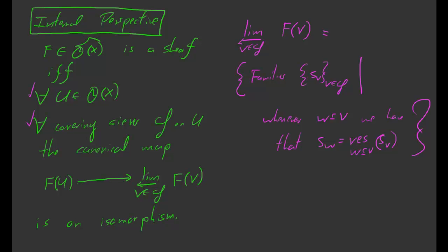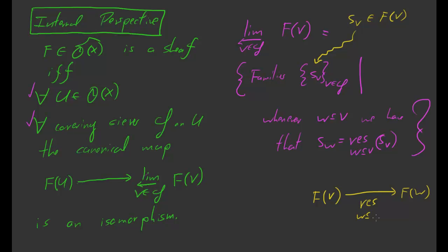To clarify: S_V is an element in F(V). So we're looking at families of elements in F(V) — for every V, we're picking some element S_V inside of F(V). The restriction map here is the restriction map from F(V) into F(W), denoted by restriction of W inside of V. So we're looking at all families which match — coherent families satisfying this restriction condition. This is one concrete way of constructing the inverse limit.